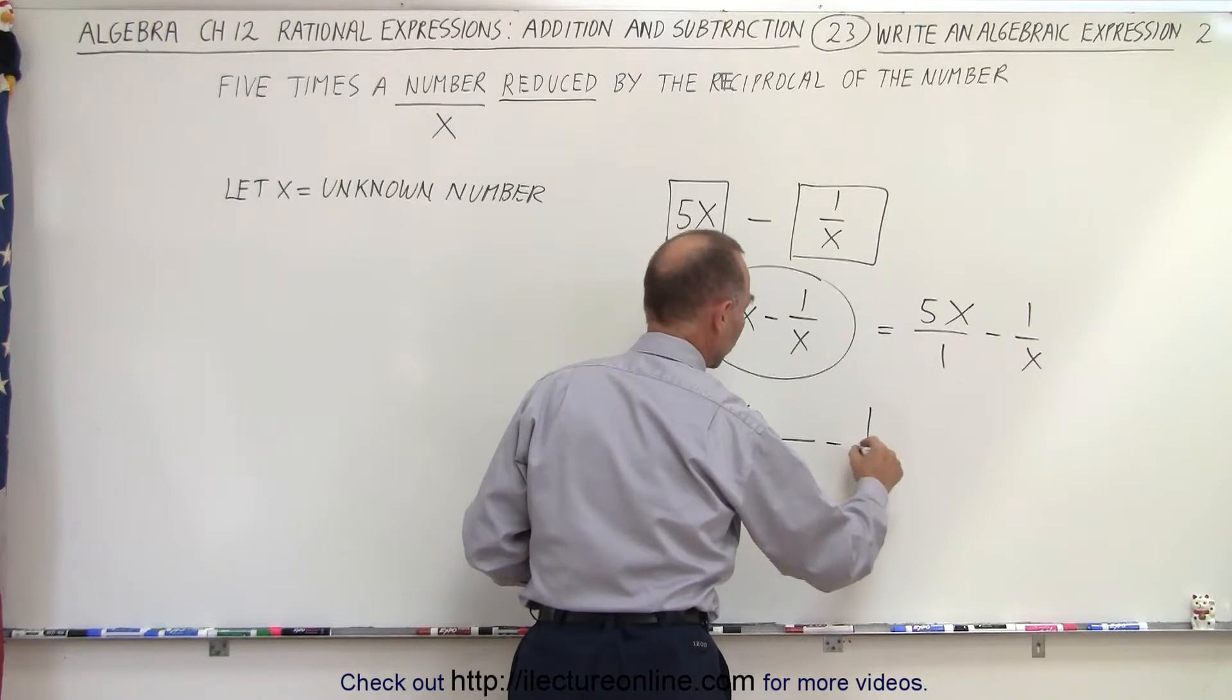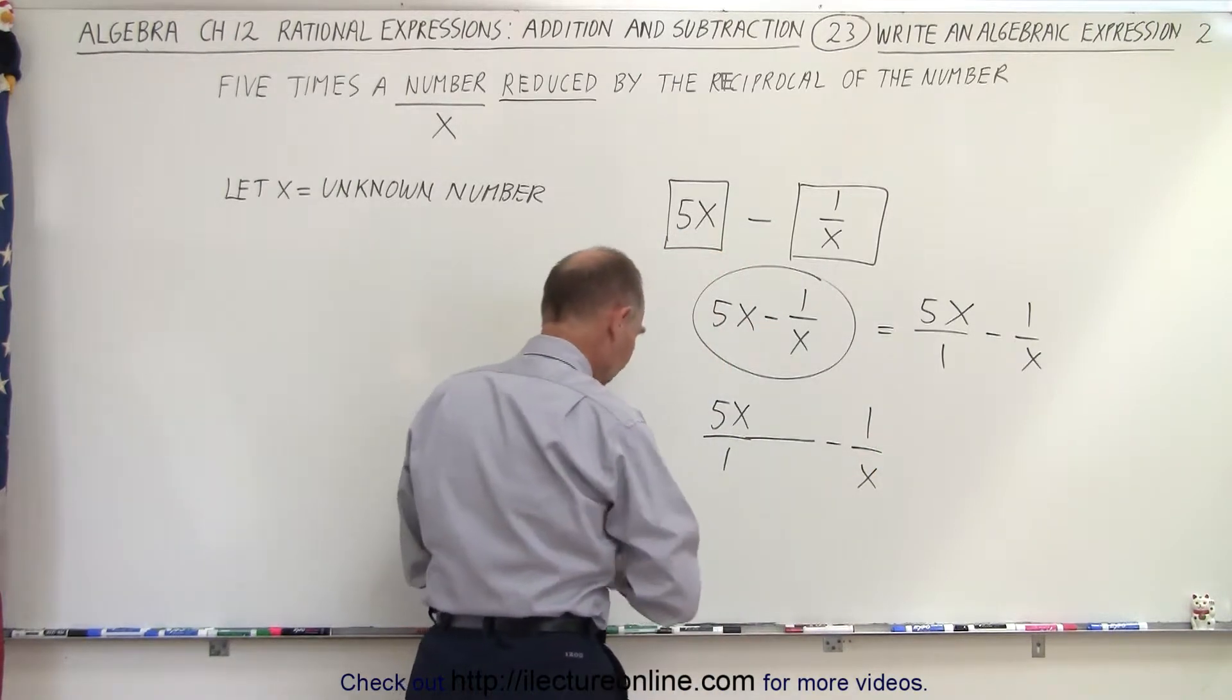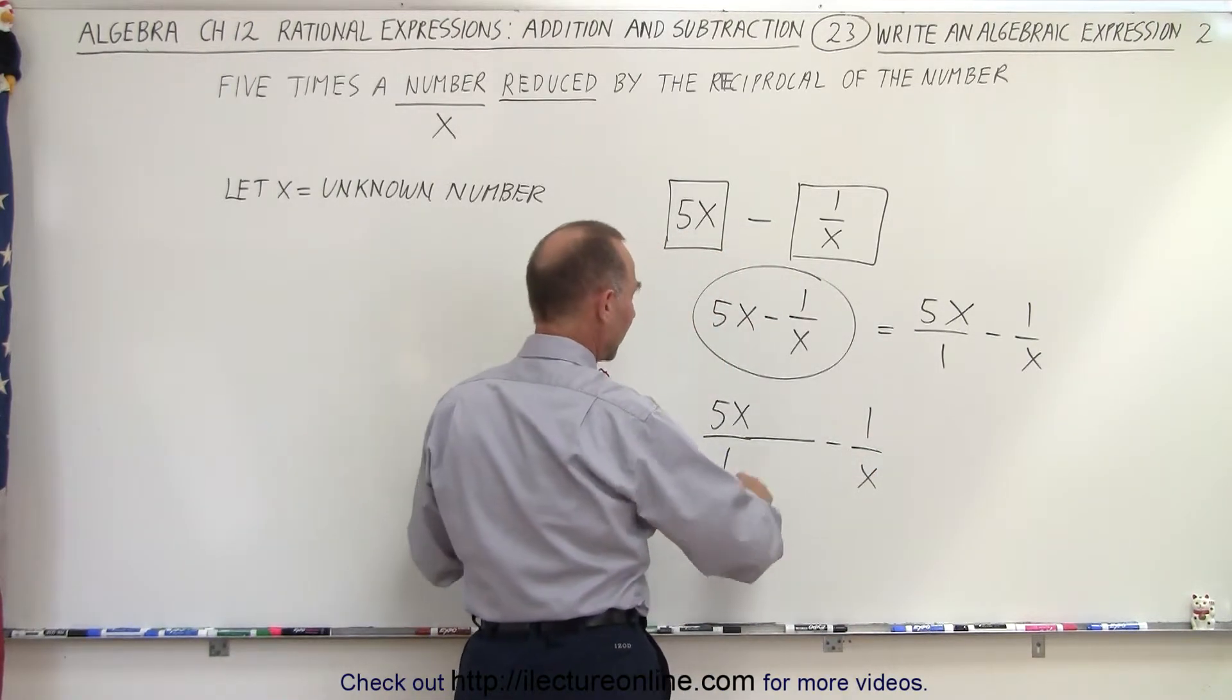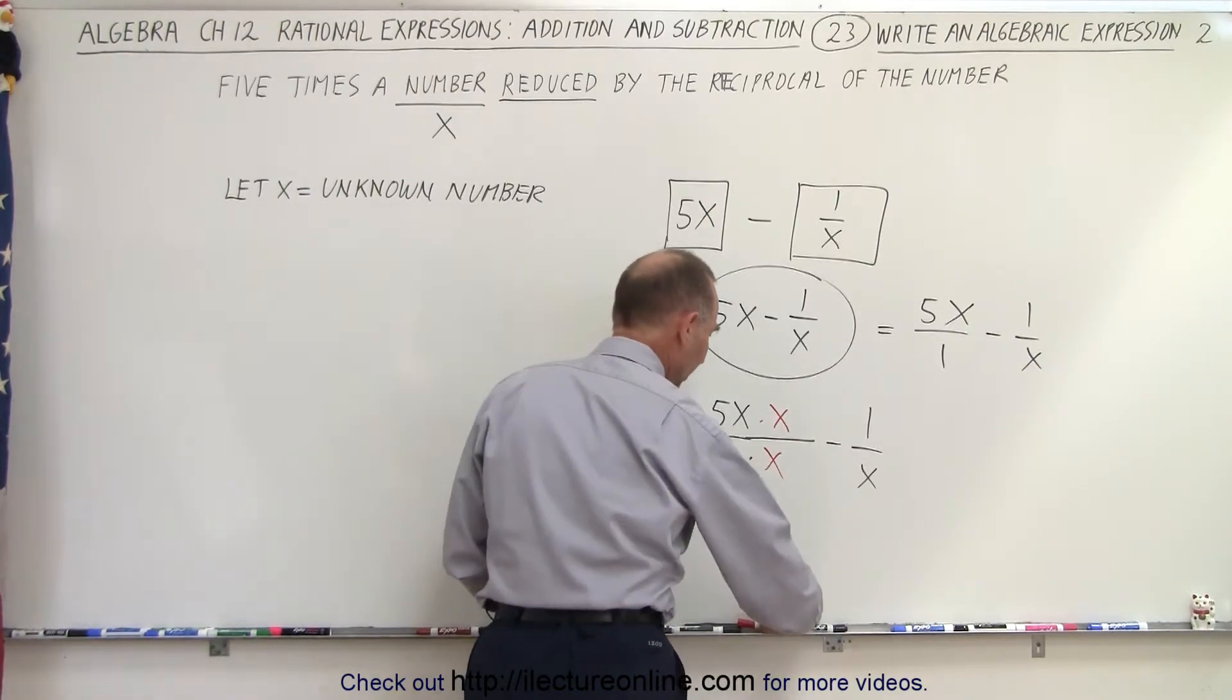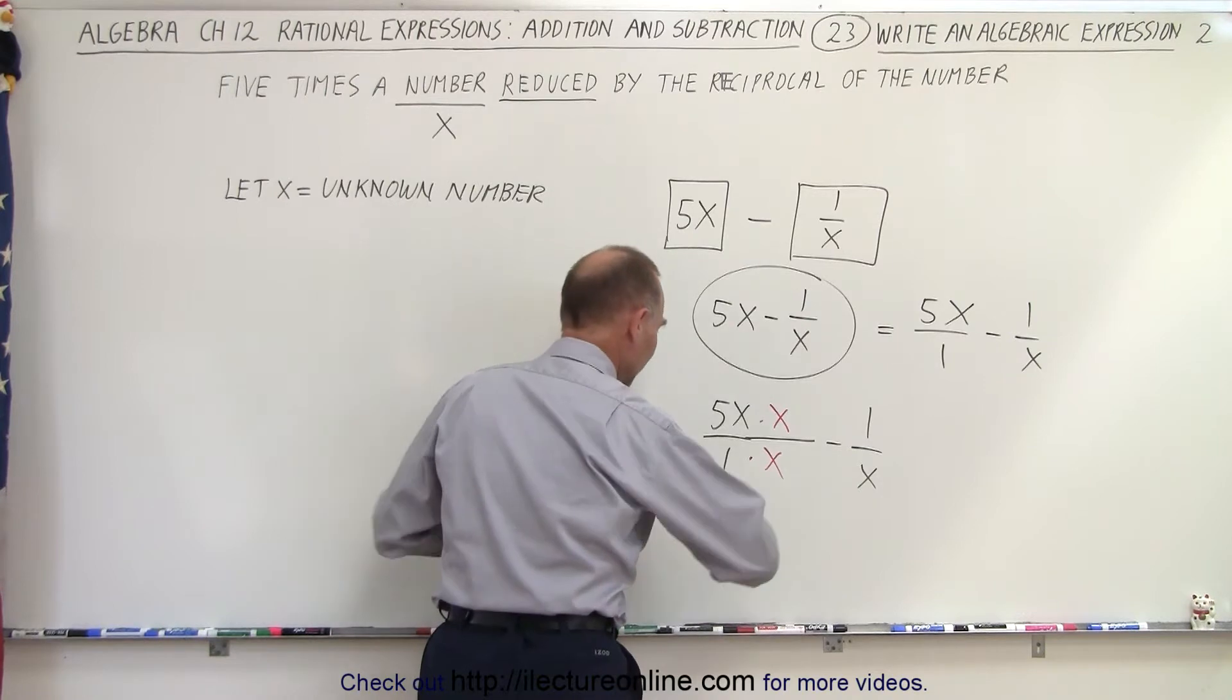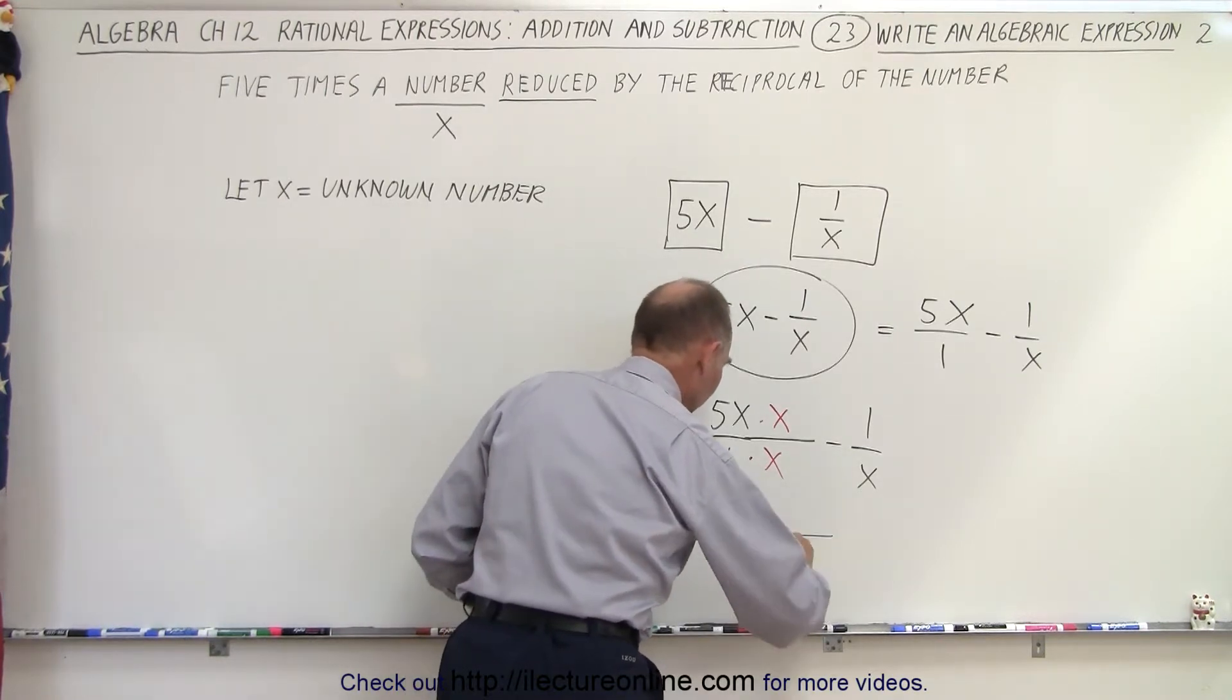We'll leave some extra space, minus 1 over x. That means I'm going to multiply the denominator by x and I must multiply the numerator by x as well. Which means that I can now write that over one common denominator, which is x.